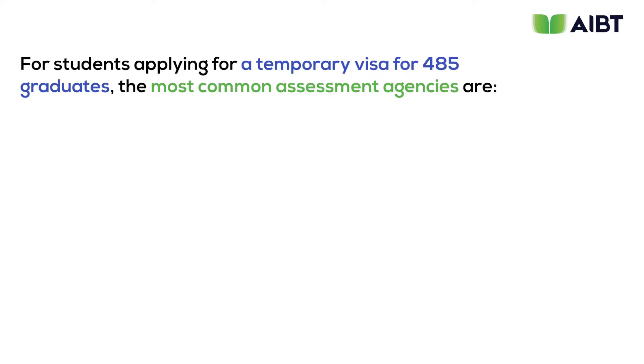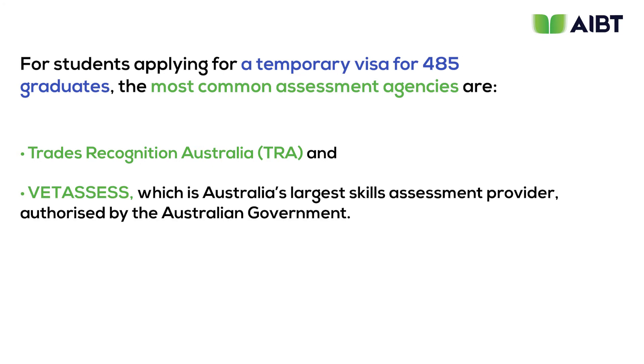For students applying for a temporary 485 graduate work visa, the most common assessing agencies are Trades Recognition Australia, or TRA, and VetAssess, which is Australia's largest skills assessment provider authorized by the Australian government. Through these assessing authorities, you can confirm whether you've completed a career assessment based on the body corresponding to your vocational course. Let's use some practical examples to make sure you understand how the occupation and course are aligned with the assessing authorities.